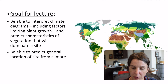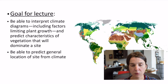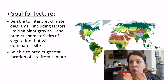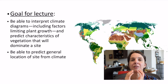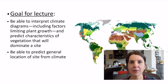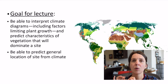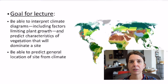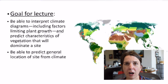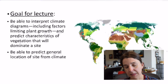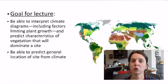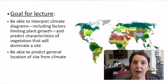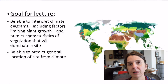The second goal for the lecture today is for you to be able to look at a climate diagram, know something about the climate, and from that climate predict things about the location of that site. And that's going to relate a lot to what we talked about last time, when we talked about the factors that control climate.